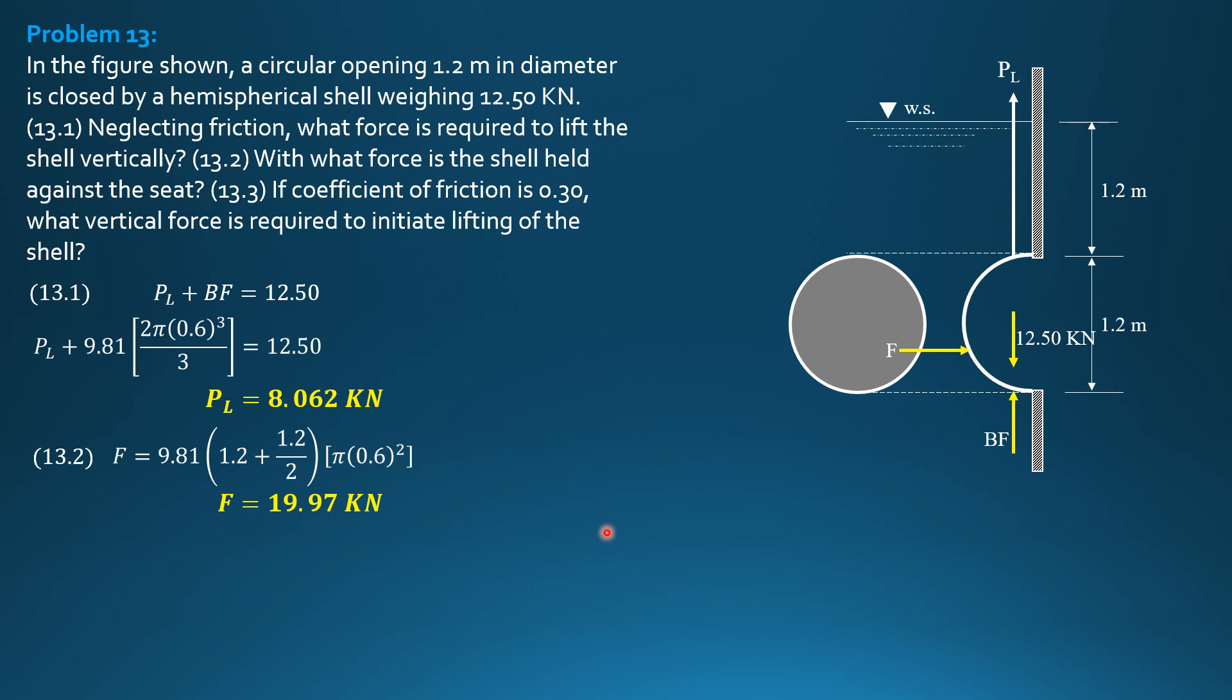Then, if coefficient of friction is 0.3, what vertical force is required to initiate lifting of the shell? So, let's apply friction here, which is downward, because the normal force is F also. Therefore, frictional resistance is coefficient of friction times normal, which is also F.